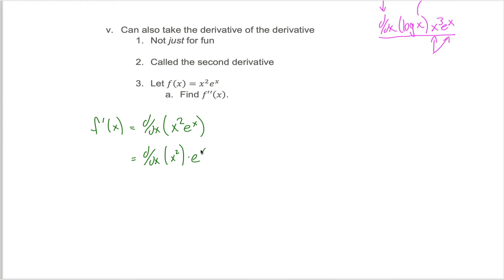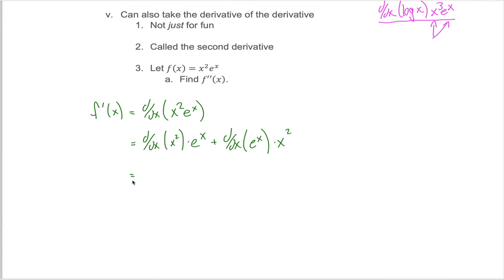and then you'd multiply that by e to the x. Then you'd add to that the derivative of the second thing, the e to the x, multiplied by the x squared. We can evaluate this. The derivative of x squared is something we know — it's just 2x using the power rule. We want to multiply that 2x by e to the x. Then we want to take the derivative of e to the x, which just happens to also be e to the x, and multiply that by x squared.